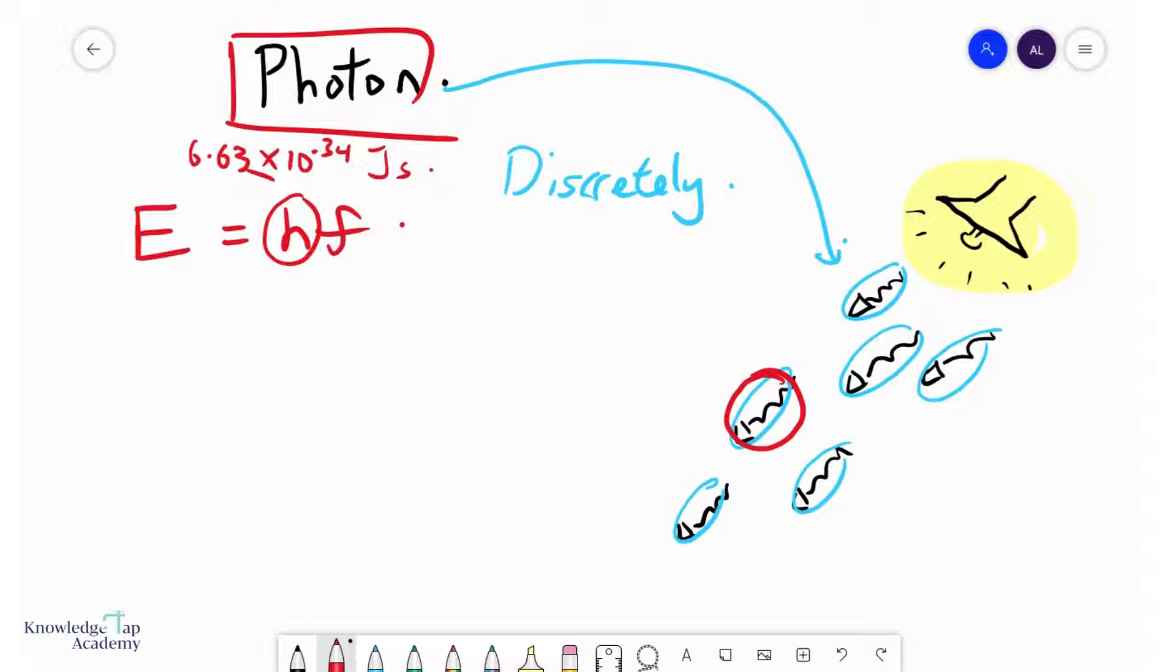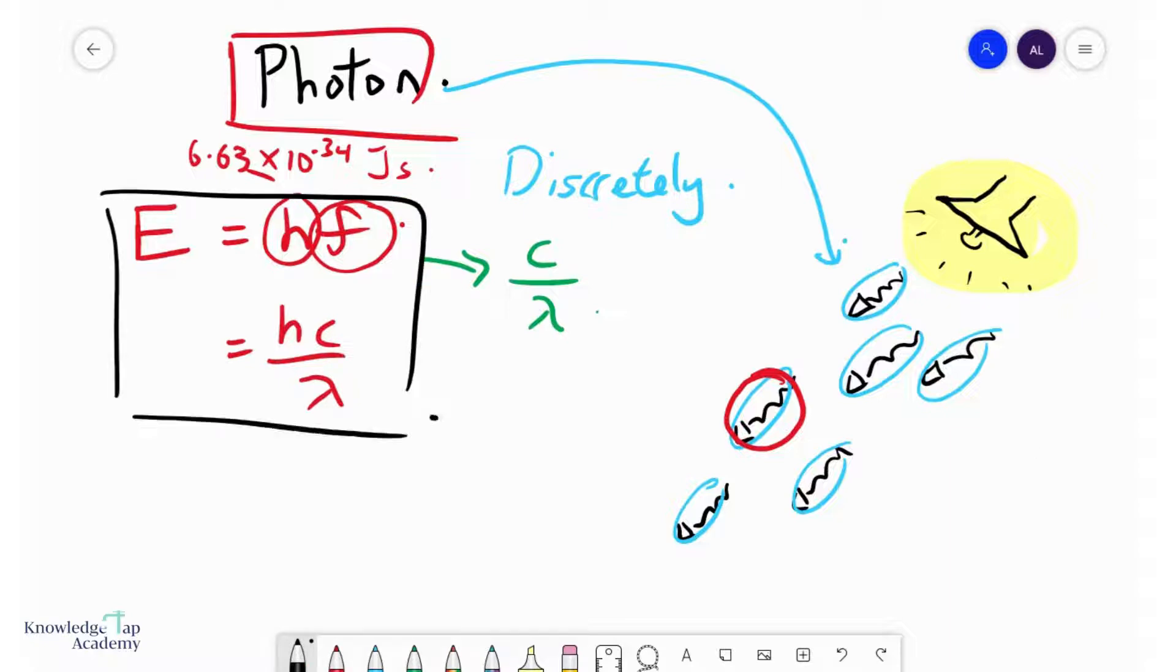Now, we can express this in terms of the wavelength of the radiation as well, simply by replacing F with the speed of EM radiation divided by the wavelength, and so this becomes HC over lambda. And that's your first key equation for quantum physics.